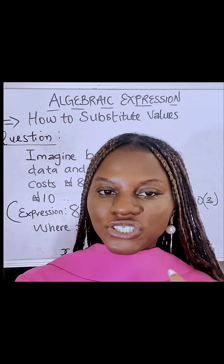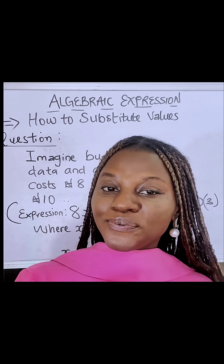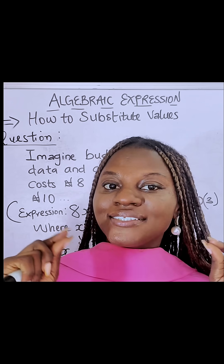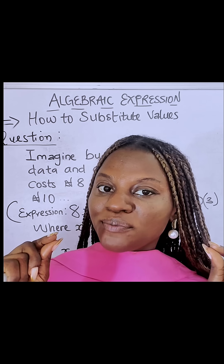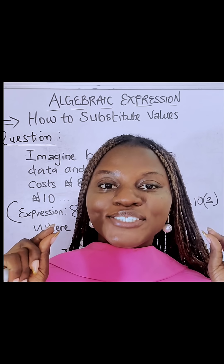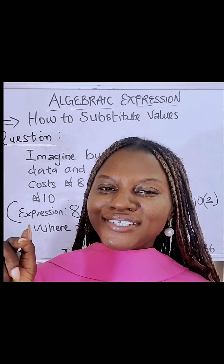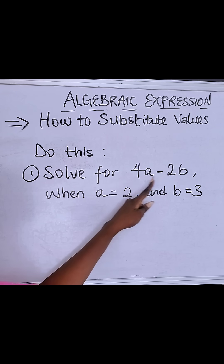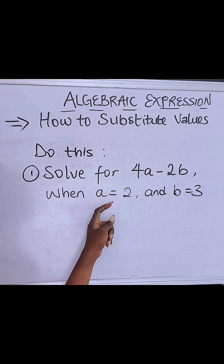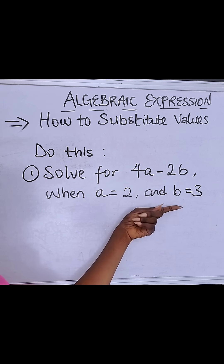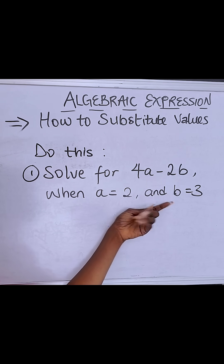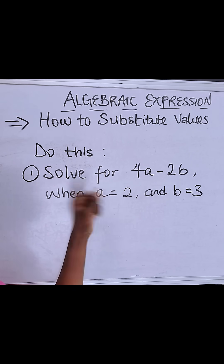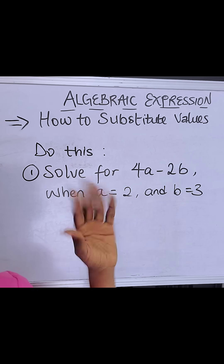I'll always have a worksheet, so if you need a link to the worksheet where you can learn at your pace and solve more examples, just comment 'substitute' in the comment section and that link will be sent to you. So for 4a minus 2b when a is 2 and b is 3, kindly let us know your answer in the comment section. Until next class, bye!